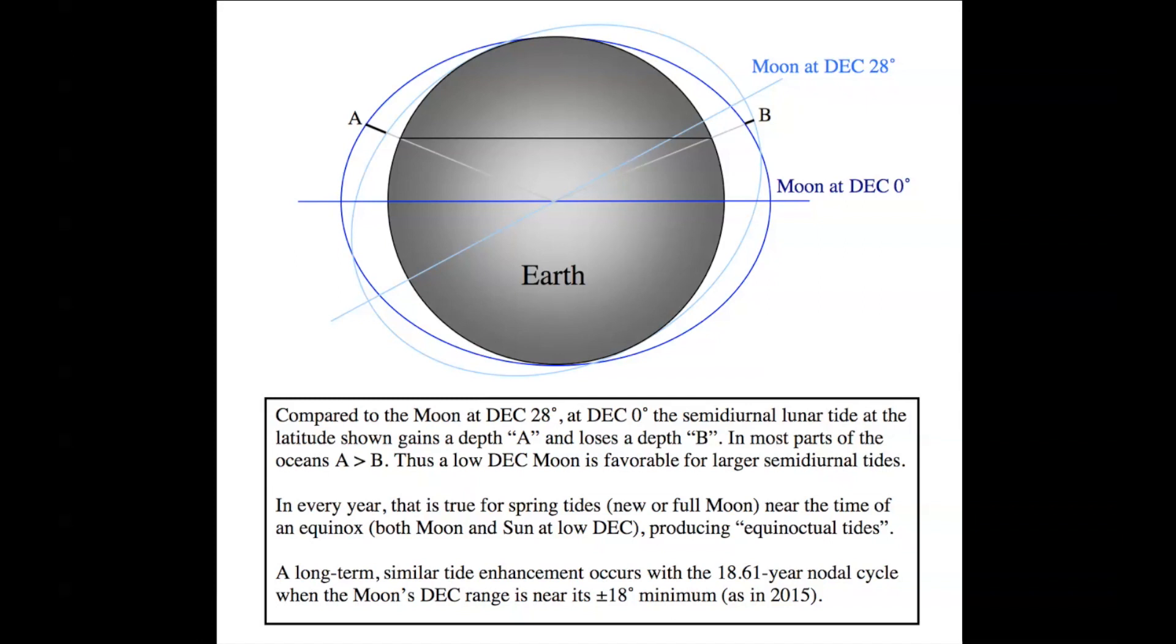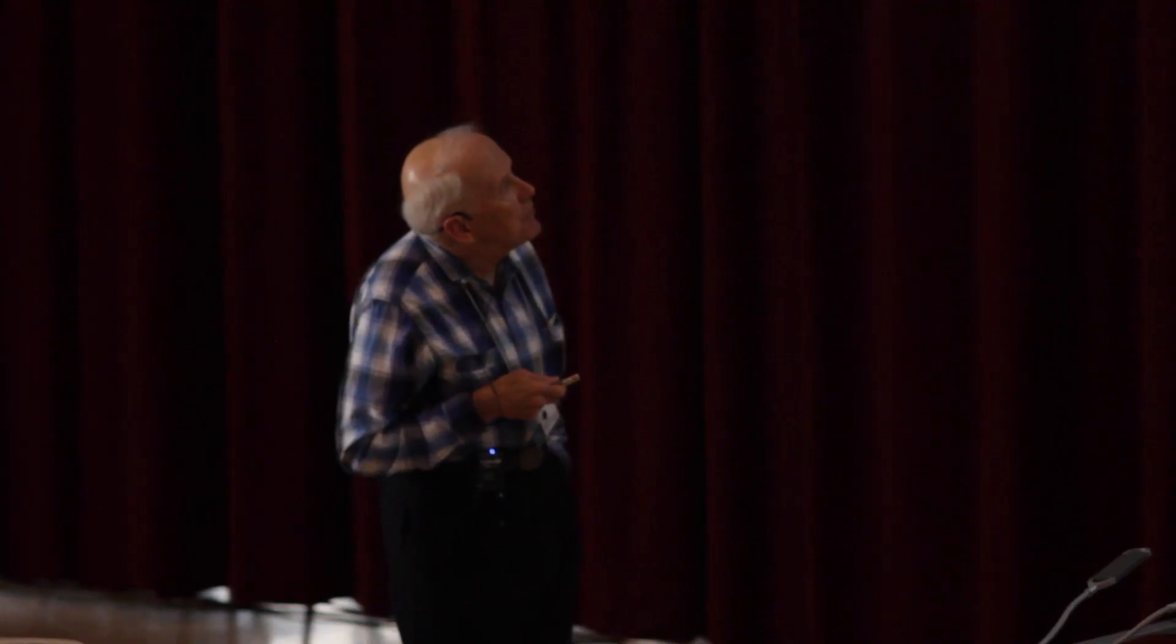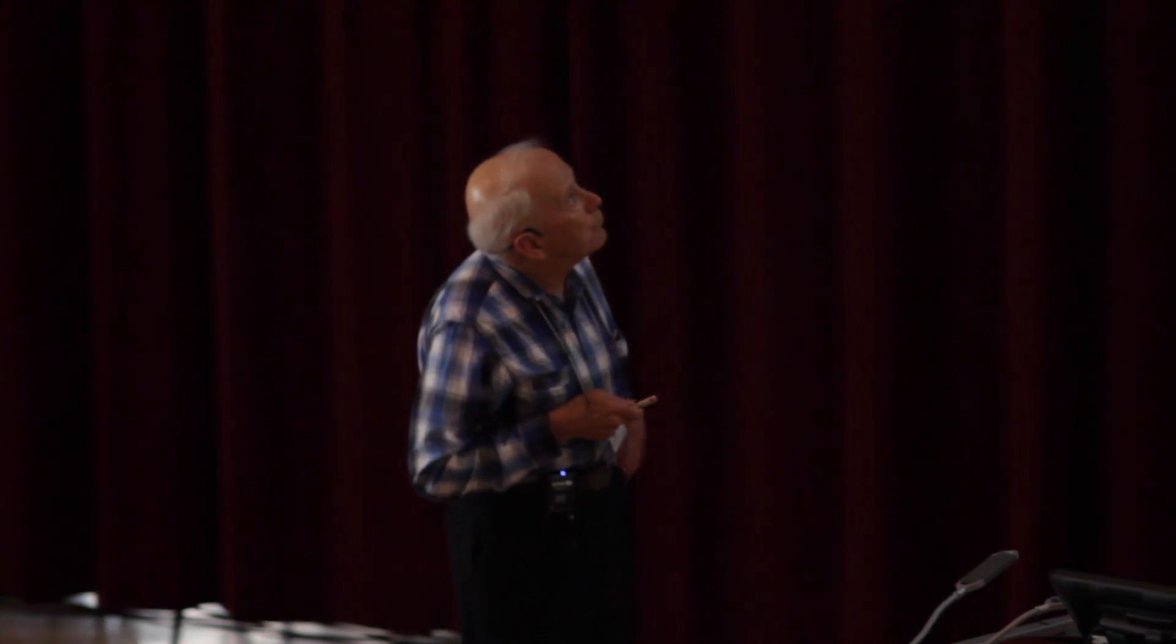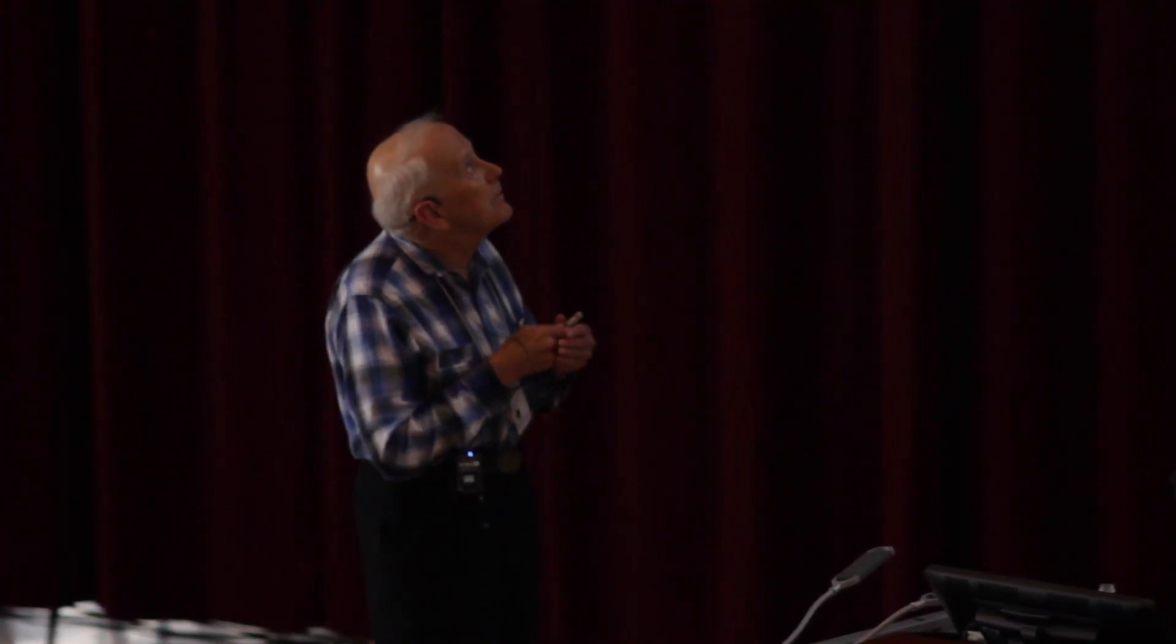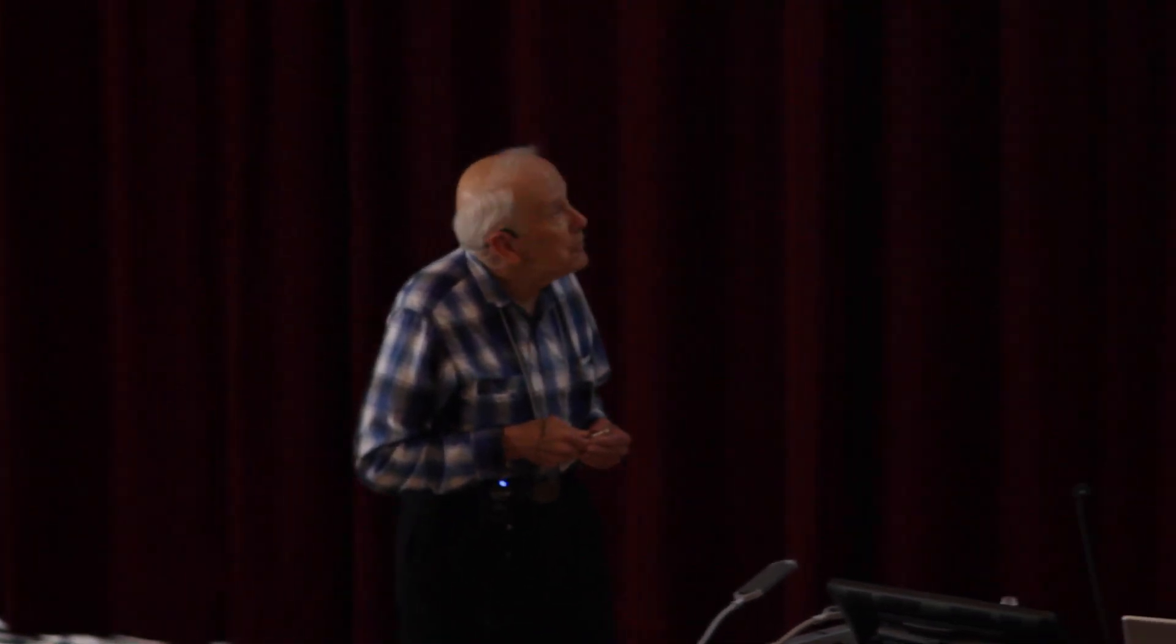In every year, this is true for spring tides, namely a new or full moon, near the time of an equinox. Because at an equinox, both the moon and the sun have a low declination, producing what are called equinoctial tides. A long-term similar tide enhancement occurs with the 18.61-year nodal period, when the moon's declination range is near its 18 degree minimum, as it is this year. So that's why you can see from the diagram why the tides tend to be, or they are bigger, when the moon is closer to the equator.